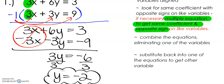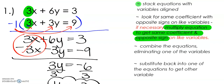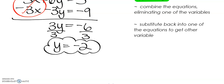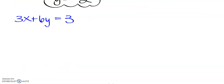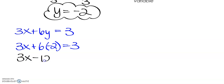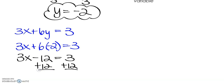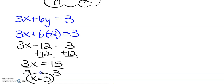We've got our y coordinate. We're going to go back and get the x coordinate by substituting into one of the two equations — substituting negative 2 for y. I'm going to use the first equation: 3x plus 6y equals 3. Substituting negative 2 in for y gives us 3x plus 6 times negative 2 equals 3. Multiply 6 times negative 2, that's negative 12, so 3x minus 12 equals 3. Add 12 to both sides: 3x equals 15. Divide both sides by 3: x equals 5. So the solution to our system is x equals 5, y equals negative 2, or the point (5, −2).